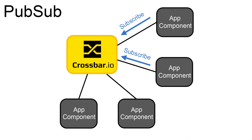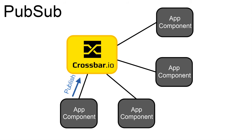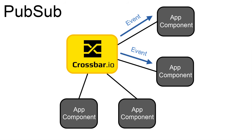With Pub-Sub, all components which are interested in information about a specific topic subscribe to that topic with Crossbar. Components which have information about that topic publish to Crossbar, and Crossbar then sends events to all subscribers.